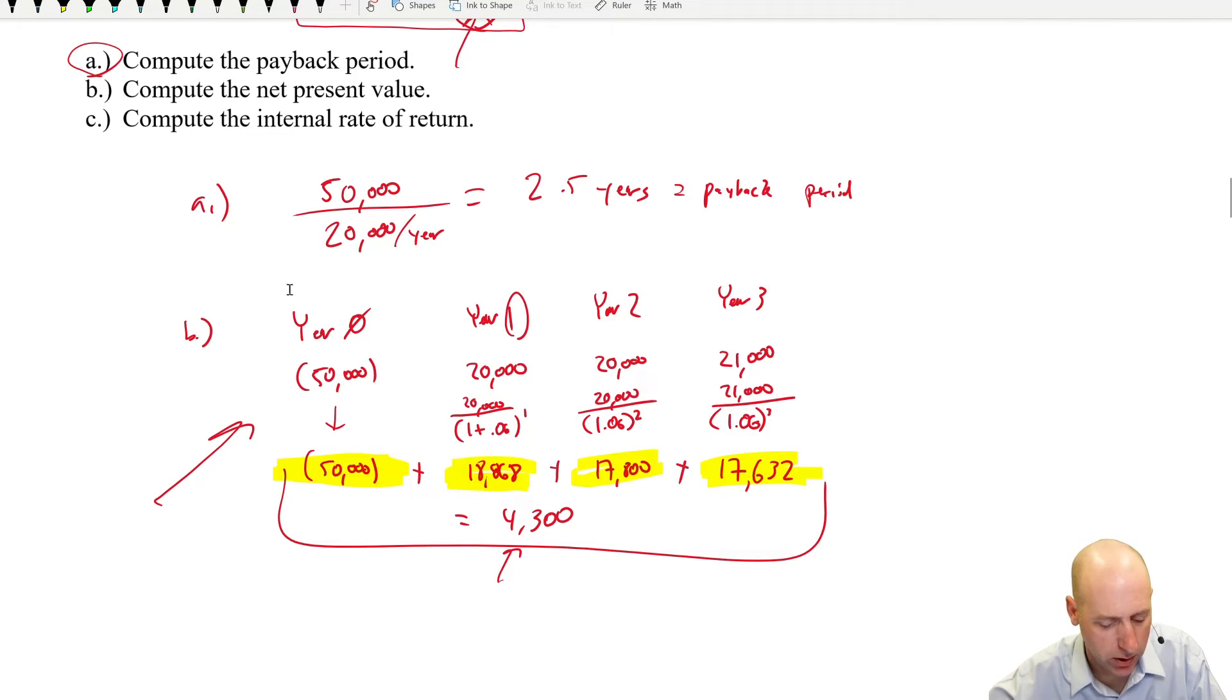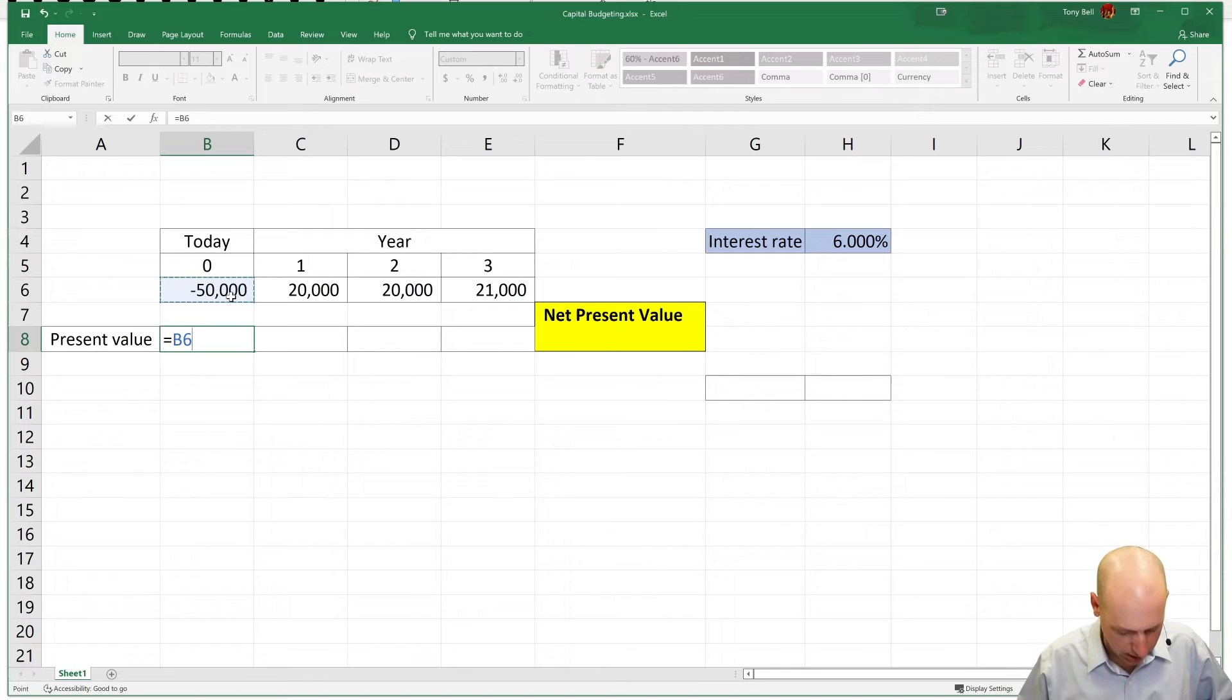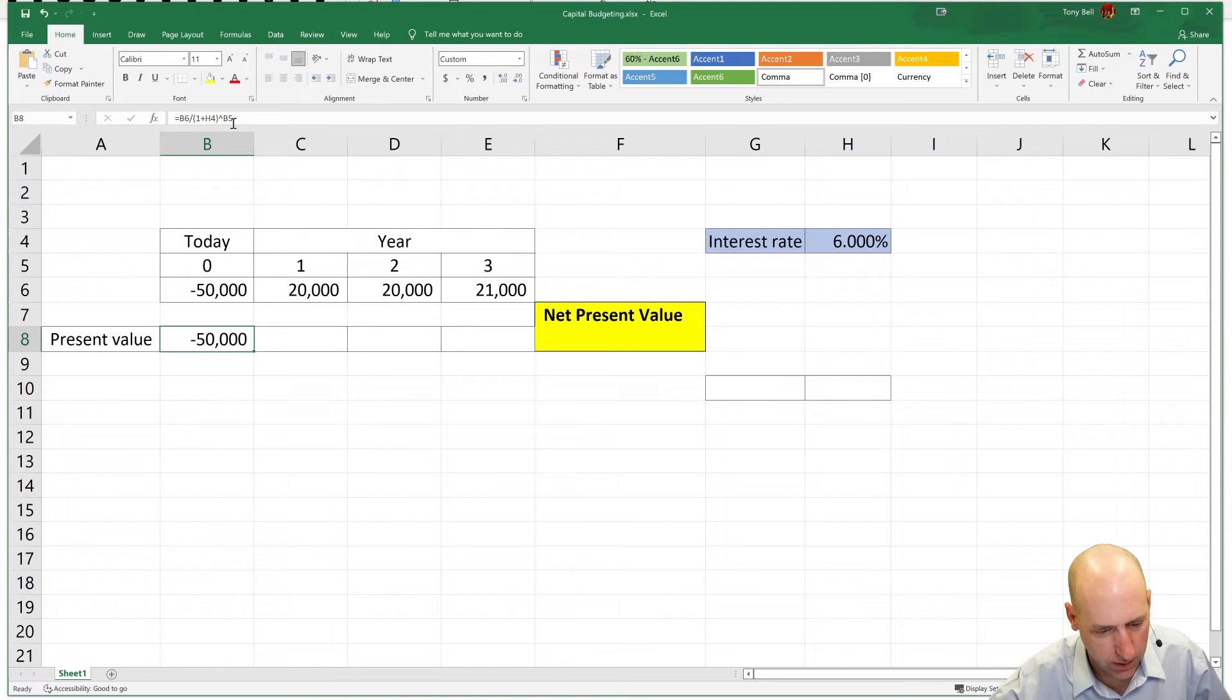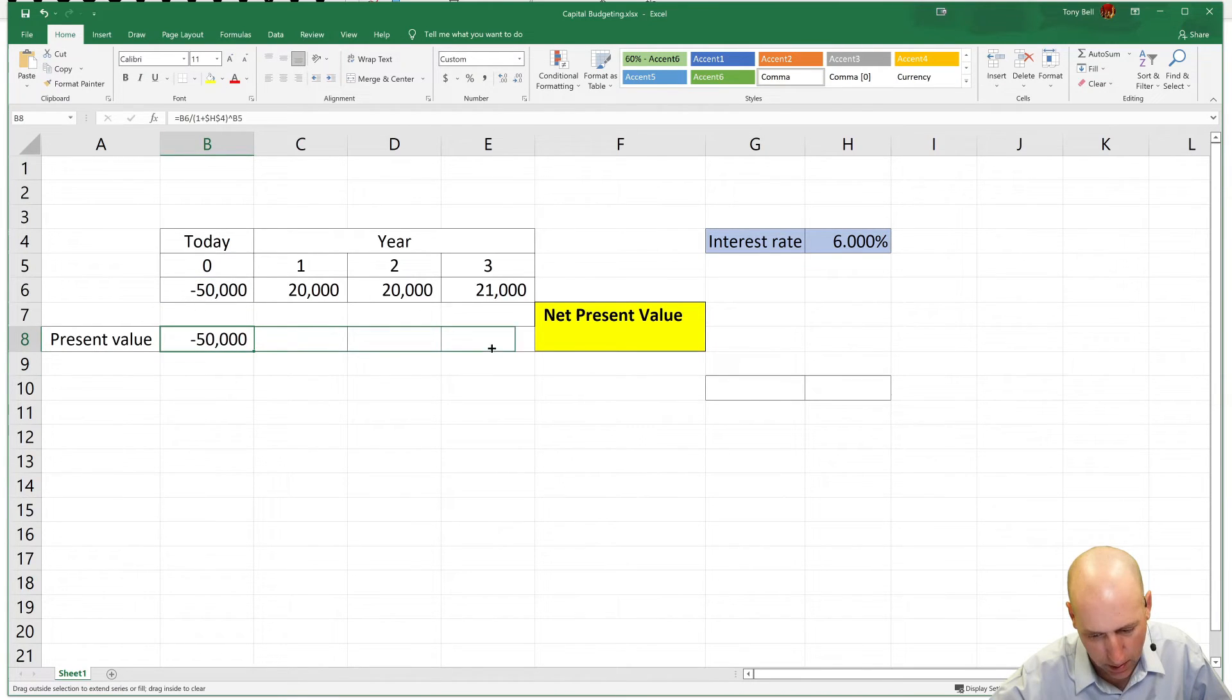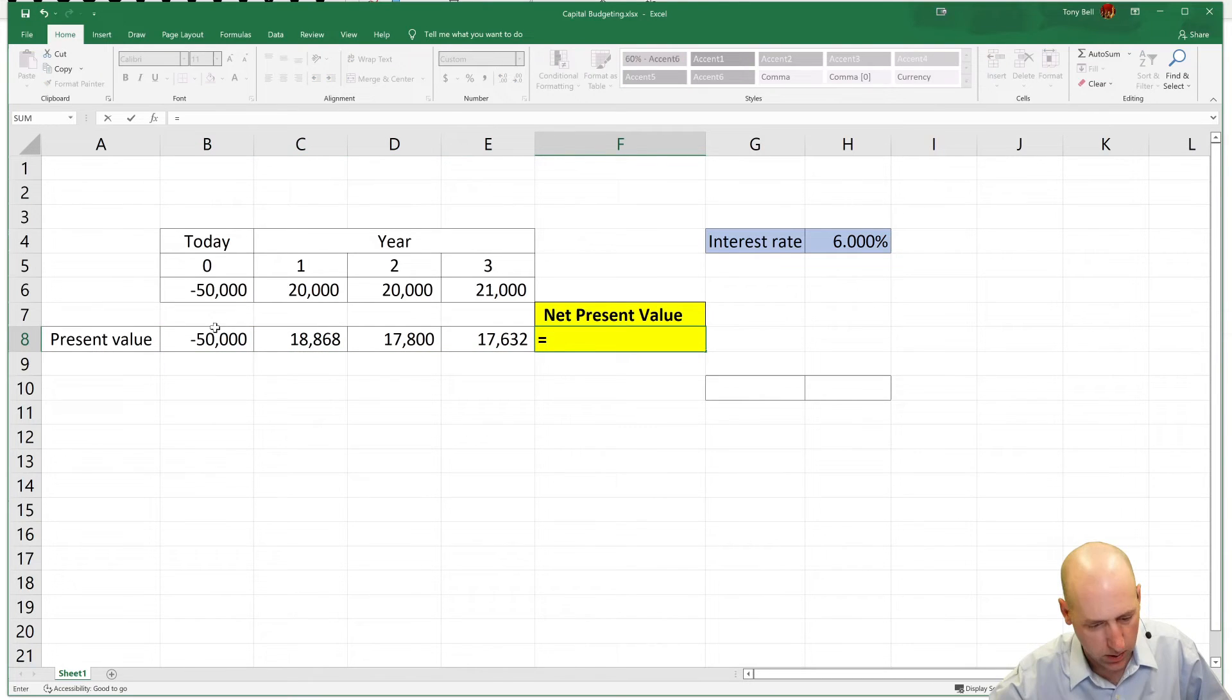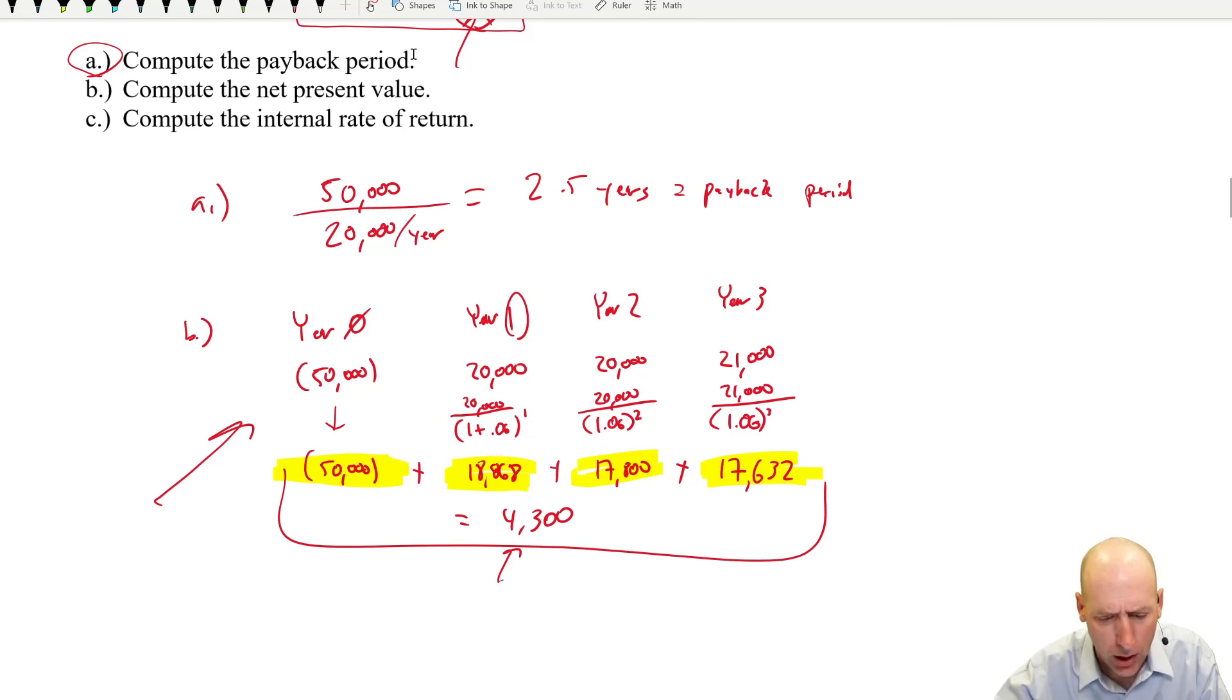And of course we can do this much more quickly in Excel, just laying out the numbers as we've laid them out. We can take the present value of each one. So equals 50,000 negative divided by one plus our interest rate, 6%, raised to the power of zero for the first one. And of course that's just 50,000 and we should be able to fill this over. I'm just going to lock in my interest rate with putting dollar signs in front of it. And if I fill this over, you can see how much more quick this goes in Excel. Now we just add them up and you can see we've arrived at the same number. So that's the net present value. It generated a positive present value of $4,300.